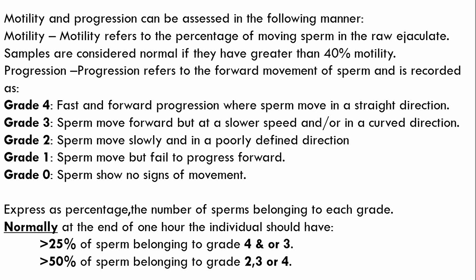Motility and progression can be assessed as follows. Motility refers to the percentage of moving sperm in the raw ejaculate; samples are considered normal if they have greater than 40% motility. Progression refers to the forward movement of the sperm and is recorded in different grades: Grade 4, Grade 3, Grade 2, Grade 1, and Grade 0.